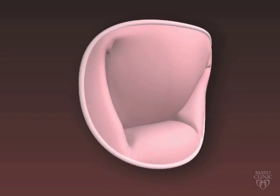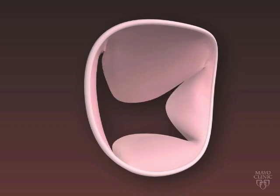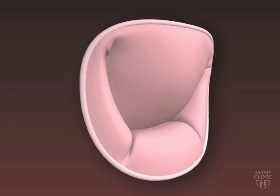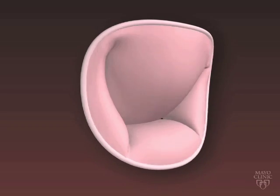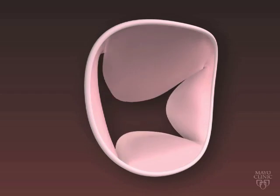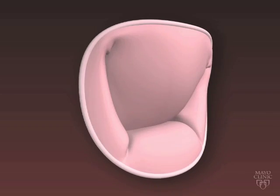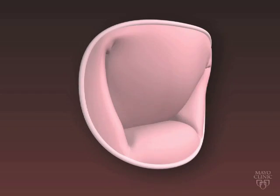The mitral valve comprises two leaflets, one anterior and one posterior. Each leaflet can be separated into three scallops due to small indentations at the free edge of the leaflets. These indentations are usually minimal.